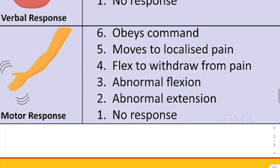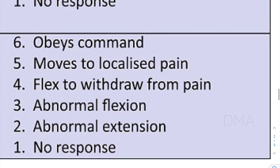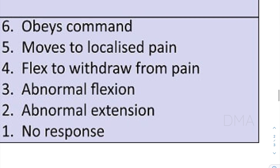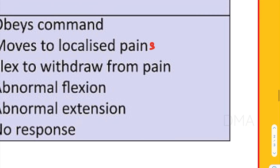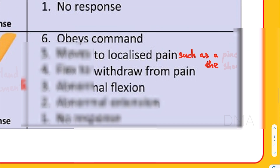The final response we evaluate is motor response, which refers predominantly to the patient's hand and leg movements. If the patient obeys simple commands to move his arms or legs, we give him a score of six. If he is unable to follow commands, we apply a central pain stimulus — such as pinching over the shoulder — and if he moves his arm toward the pain, localizing it, we give him a score of five.